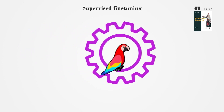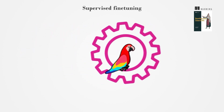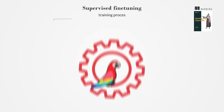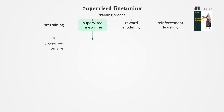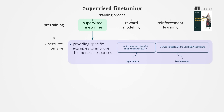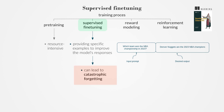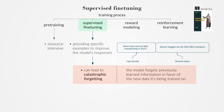Overcoming LLM limitations through additional training involves understanding the training process, which includes pre-training, supervised fine-tuning, reward modeling, and reinforcement learning. Pre-training is resource-intensive, while supervised fine-tuning involves providing specific examples to improve the model's responses. However, fine-tuning can lead to catastrophic forgetting, a phenomenon where the model forgets previously learned information in favor of the new data it's being trained on.